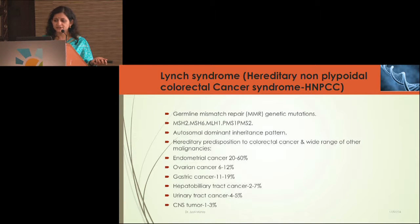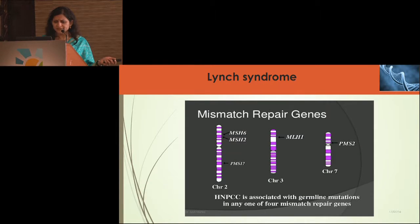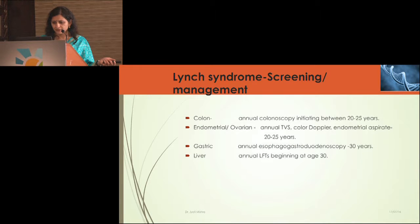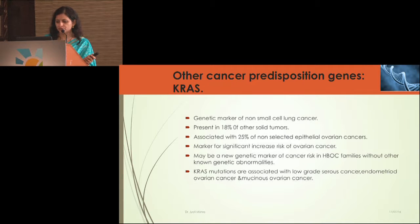Lynch syndrome — hereditary non-polyposis colorectal cancer syndrome (HNPCC) — involves a variety of cancers: endometrial, ovarian, gastric, hepatobiliary, and others. Most of the time, these patients present with gynecological cancers first and are thus earliest detected through gynecology. This happens due to mismatch gene repair defects. Management requires annual colonoscopy, transvaginal ultrasound with color Doppler starting at 20–25 years of age, and LFTs for gastric and liver surveillance.